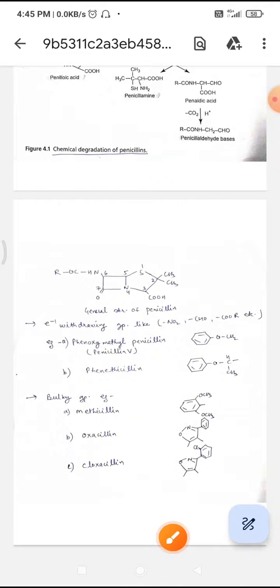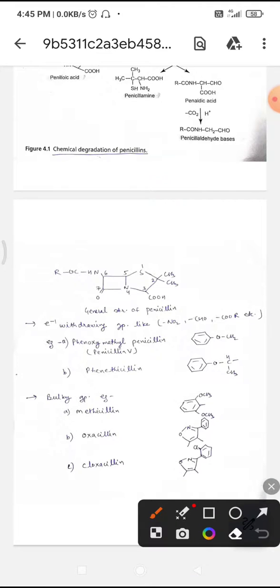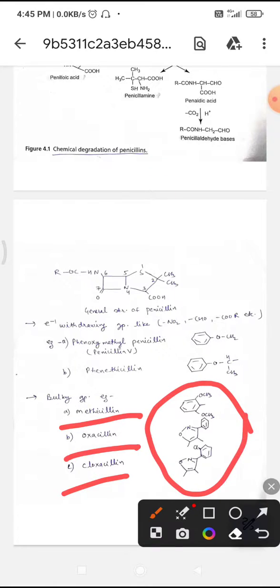Bulky groups due to steric hindrance provide resistance to beta-lactamase. For example, methicillin, oxacillin, and cloxacillin have bulky groups in their structure.